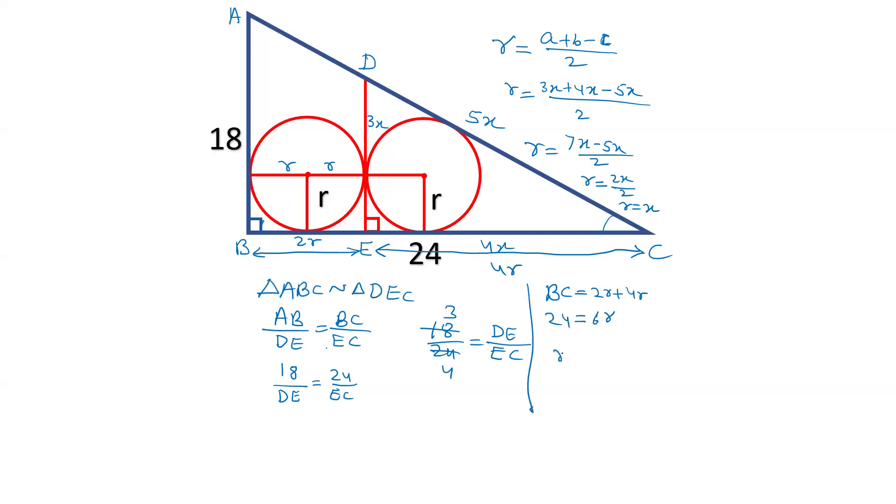So the radius of the circle comes out to be 24 by 6, and that is 4.